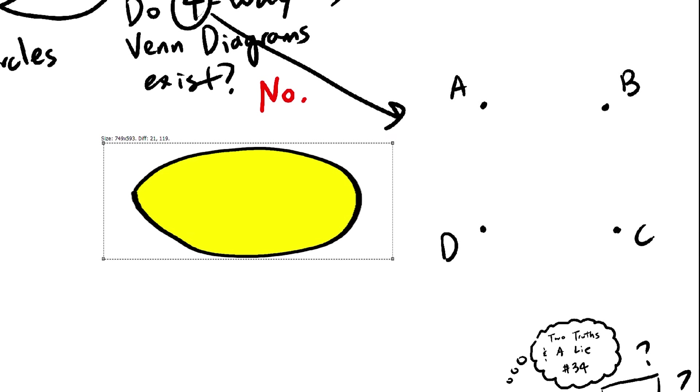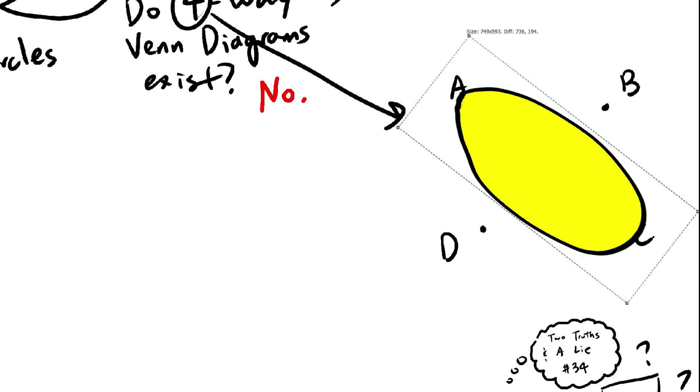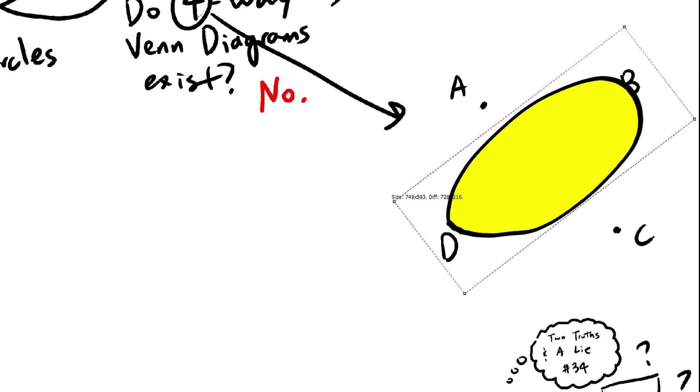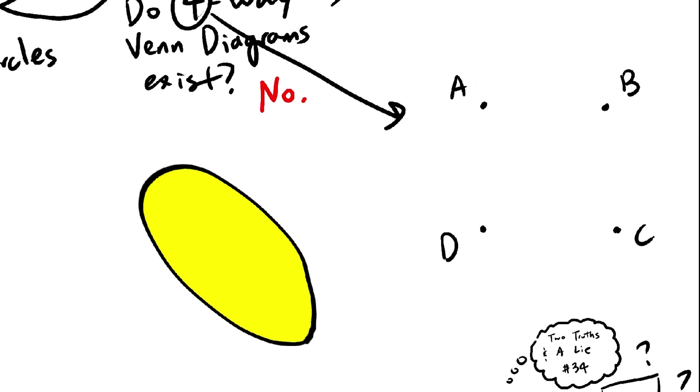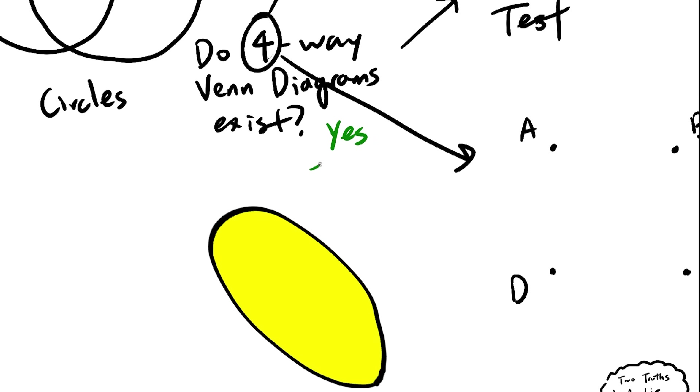Now let's try ellipses. If I want A and C in the ellipse, but not B or D, I can make that happen. And I can make it happen for any other combination of points as well. Therefore, a 4-way Venn diagram is possible using ellipses.